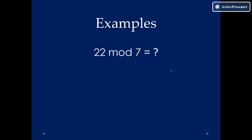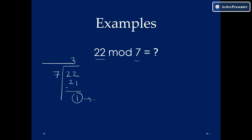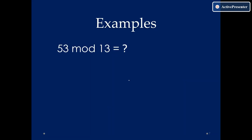If instead of 21 we have 22, so 22 mod 7 — first check: is A greater than 7? Yes. So I divide A by B. 7 into 3 results in 21, and the remainder is 1. The remainder itself is always your answer. So 22 mod 7 results in 1.